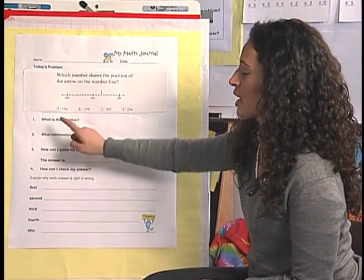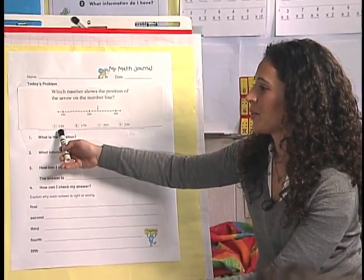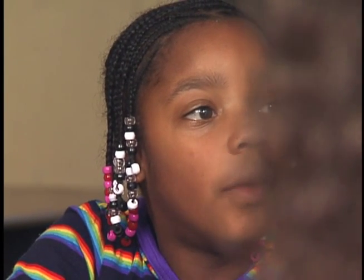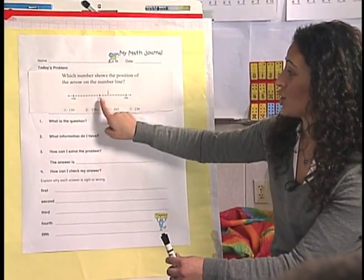Let's start with the A's. Raise your hand way high in the air if you're an A. Jeanette, is this right or is it wrong and why? Wrong, because 130 is in the middle of 100s and 200s and it's not in the middle of 200 and 300. Excellent. Did you guys hear her answer? She said that 130 is between 100 and 200, but not between 200 and 300.